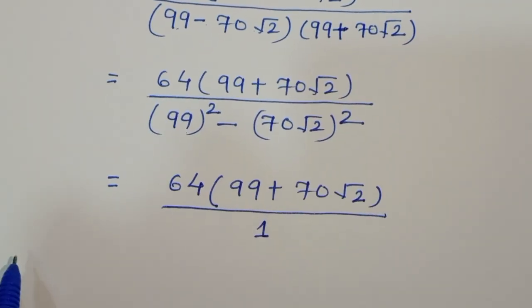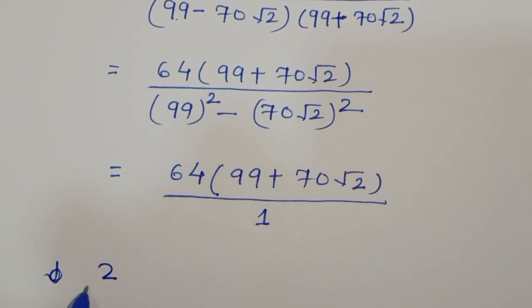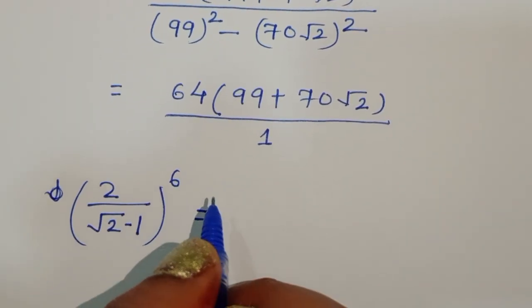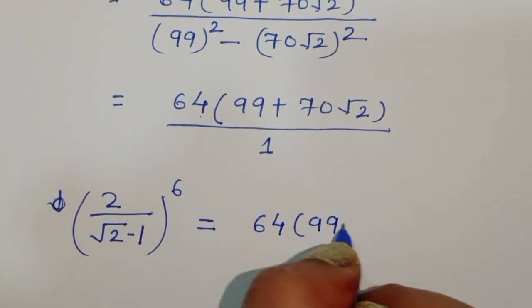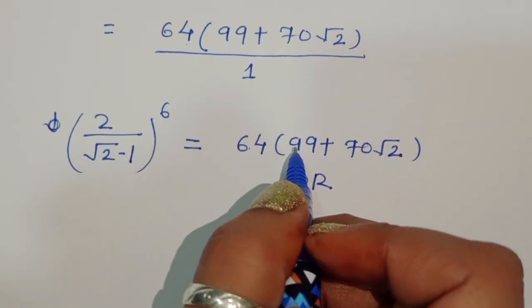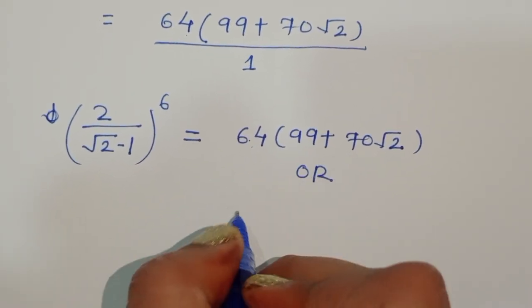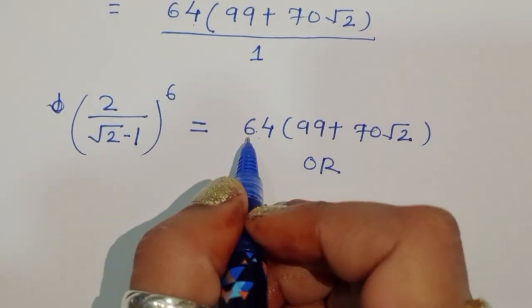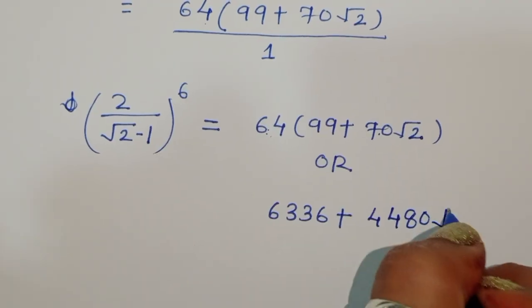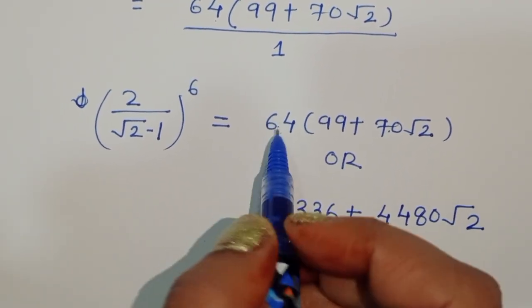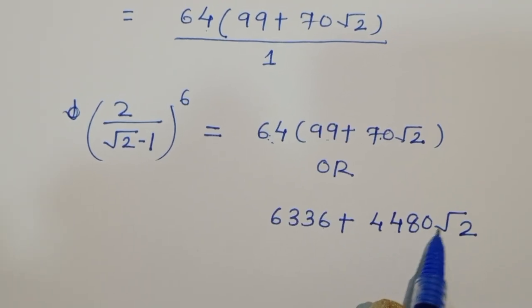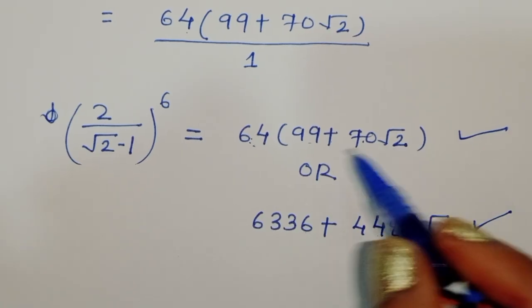Therefore the result is 64 times (99 plus 70 square root of 2). Expanding: 64 times 99 is 6336, and 64 times 70 square root of 2 is 4480 square root of 2. So the final answer is 6336 plus 4480 square root of 2.